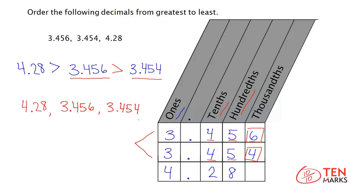Remember, to compare numbers, we always begin with the highest place value and compare the corresponding digits. The number with the greater digit is always greater. If the digits are the same, move to the next place value and check again, and so on until you get a different digit. Thanks for watching!